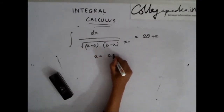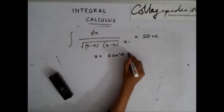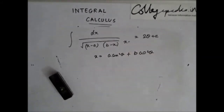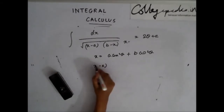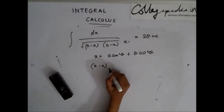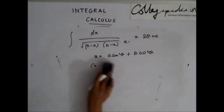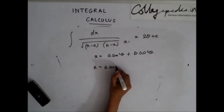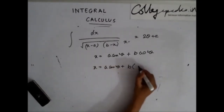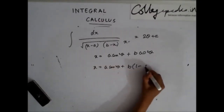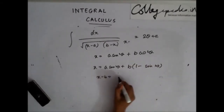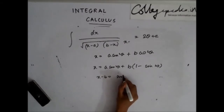Starting from x = a cos²θ + b sin²θ, we can write cos²θ as (1 − sin²θ), so x = a(1 − sin²θ) + b sin²θ.